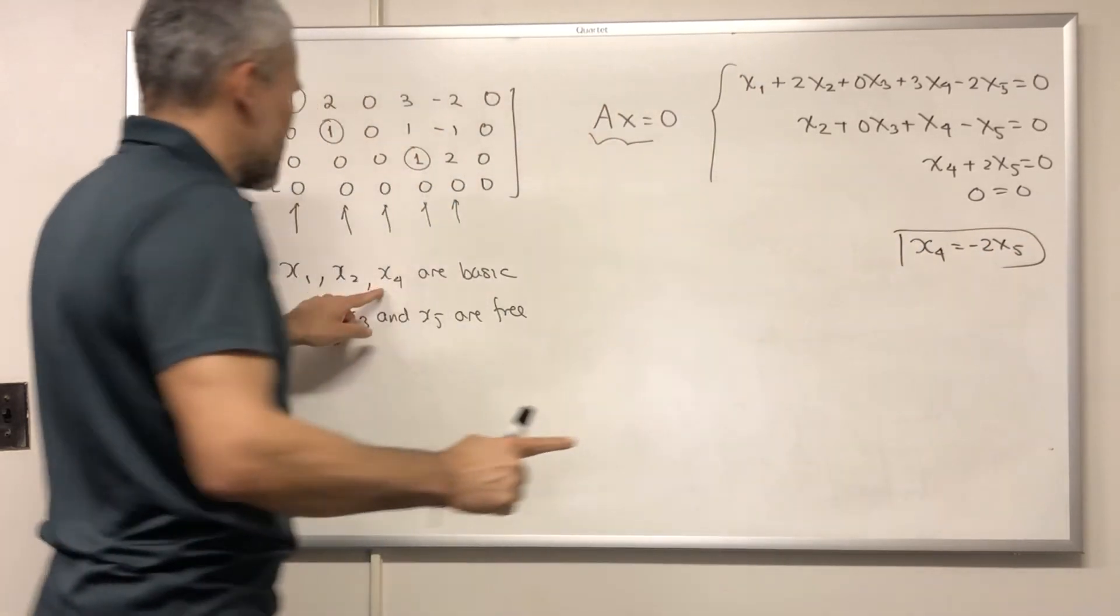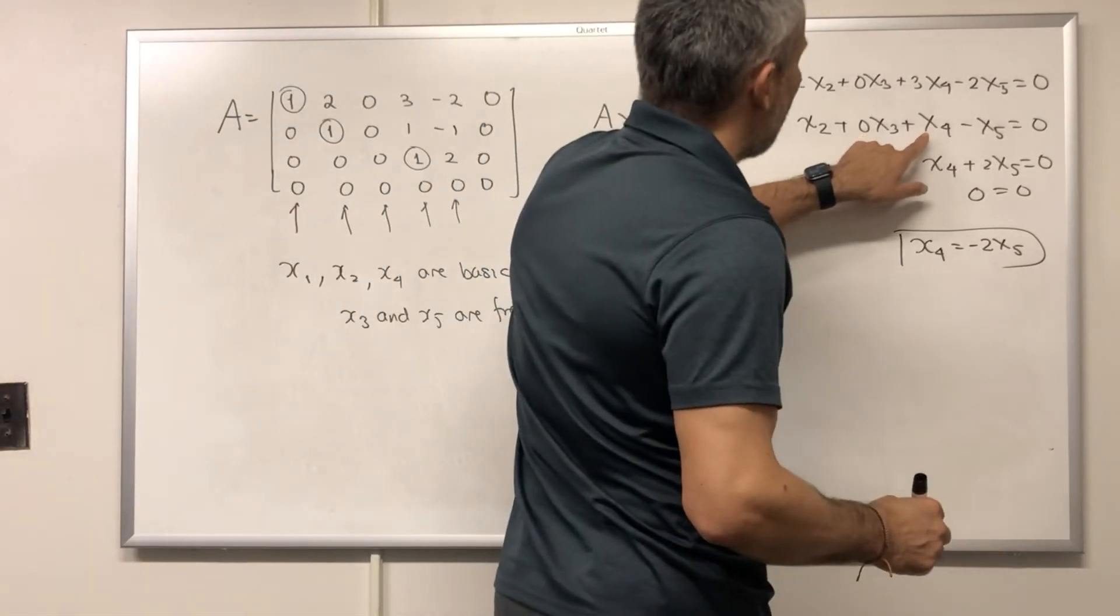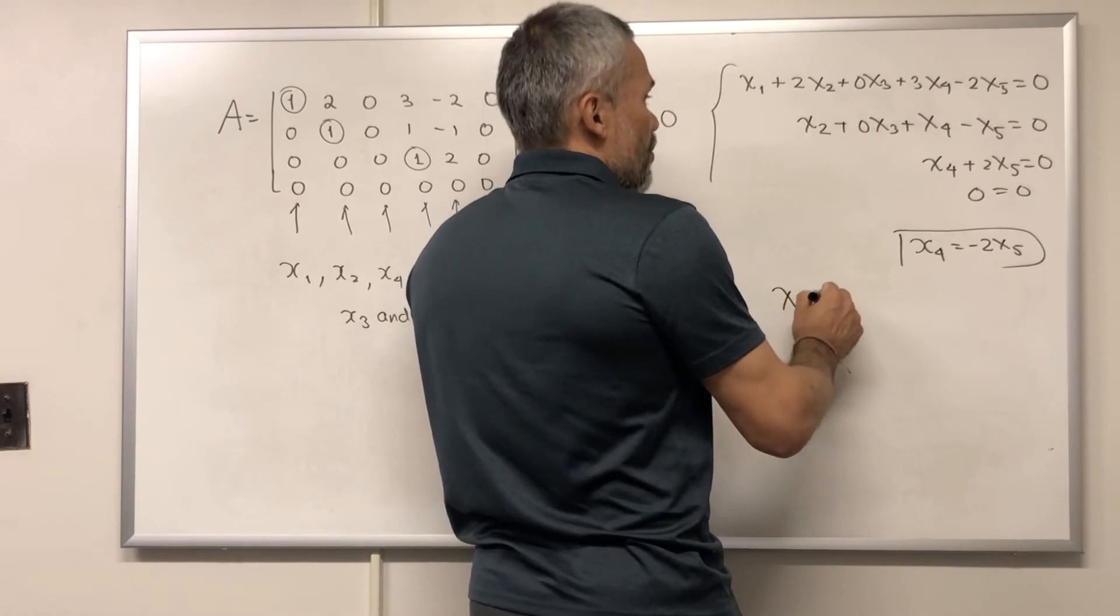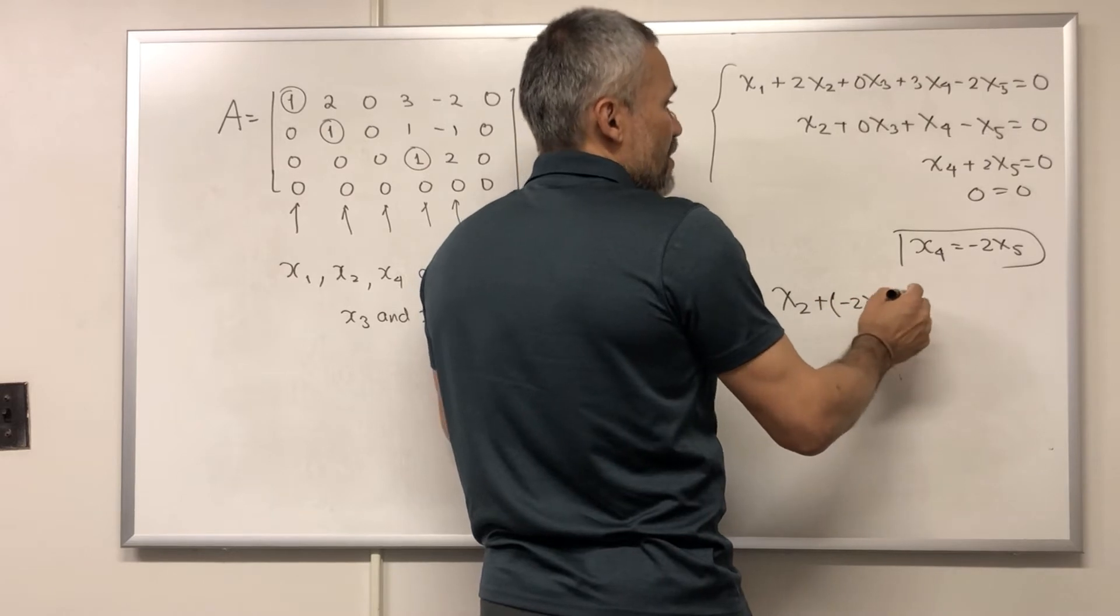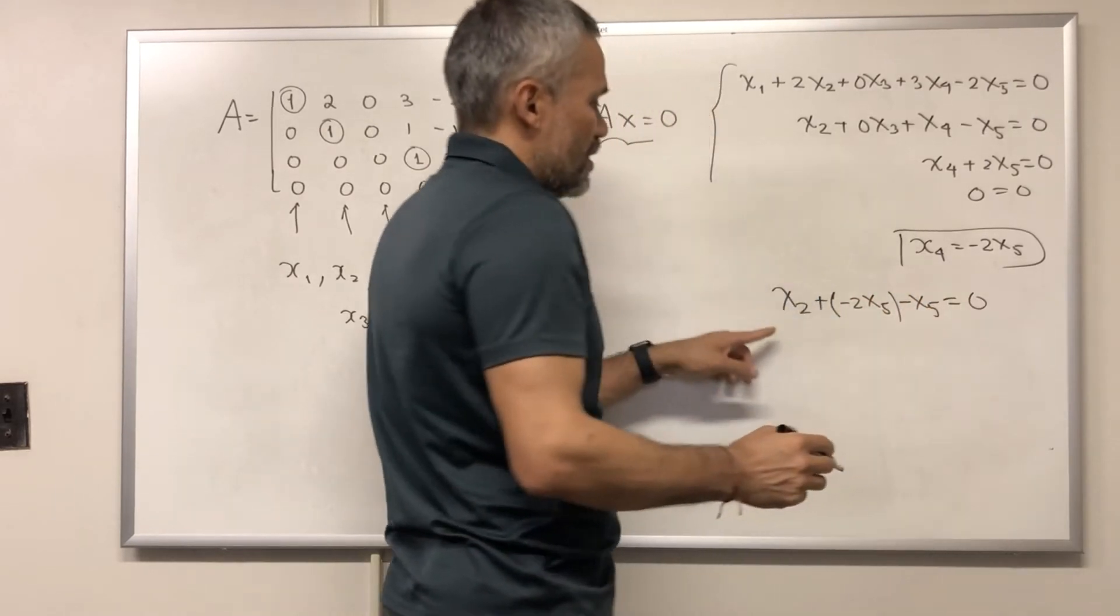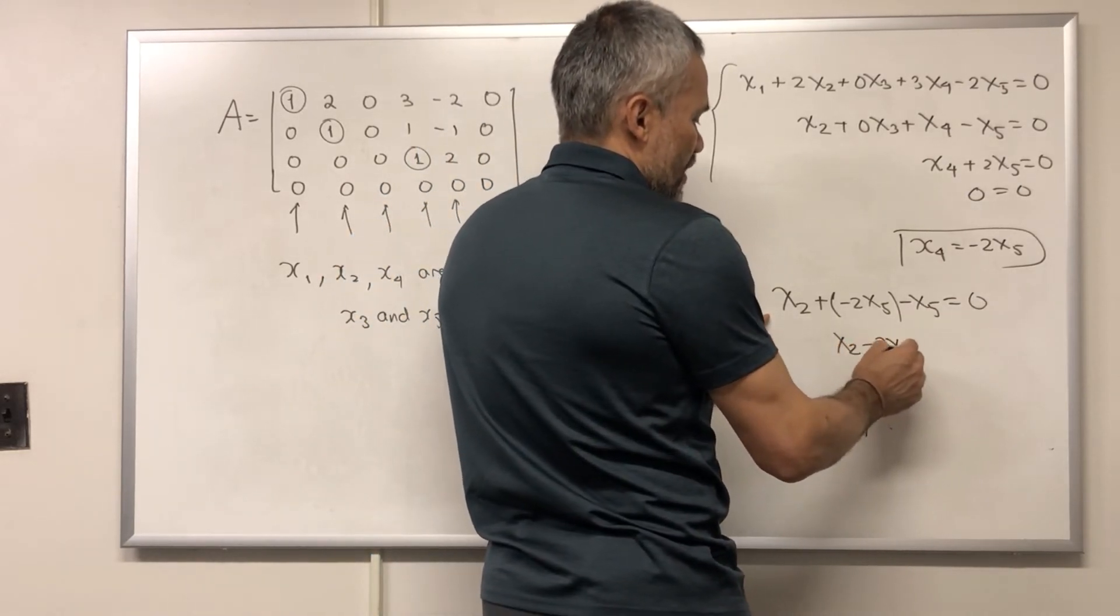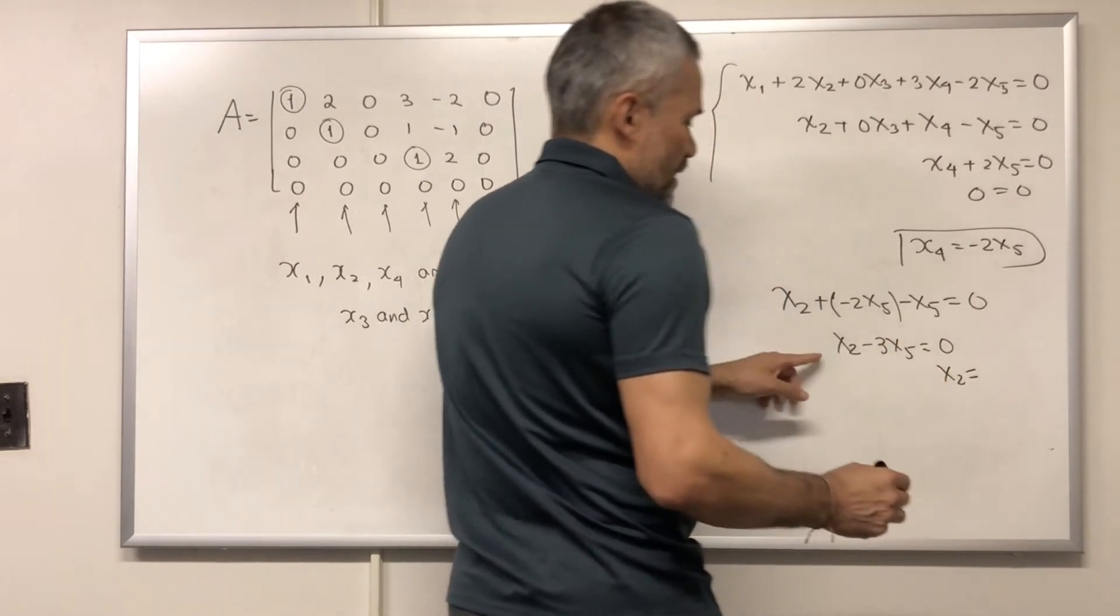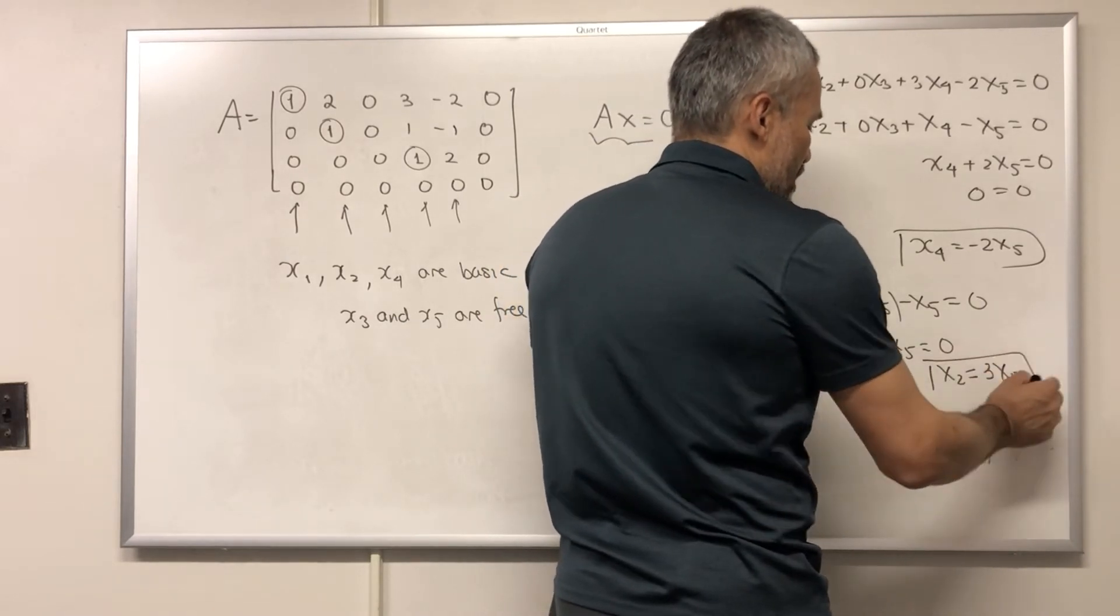You see, this is X4 which is basic. It's written in terms of the free variables. And here, from this equation, we get that X2 plus X4 but X4 is negative 2X5 minus X5 equals 0. And this is X2 minus 3X5 equals 0. And that means that X2 is equal to 3 times X5.